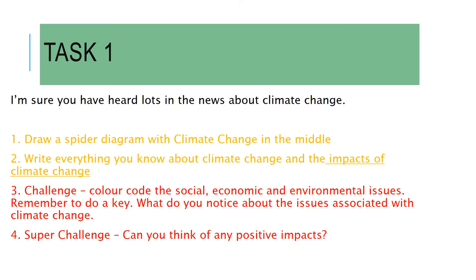I'm sure you've heard lots about climate change in the news. I would like you to draw a spider diagram with 'climate change' written in the middle. Write around the outside everything you already know about climate change, and in particular I would like you to focus on the impacts — what's going to happen because of climate change. If you'd like a challenge, think about your impacts and categorise them as social, economic, and environmental, and perhaps colour code those differently. Do you notice any similarities or differences?